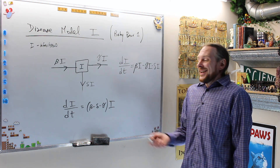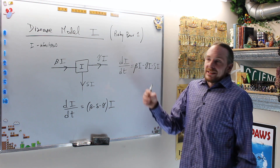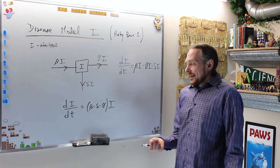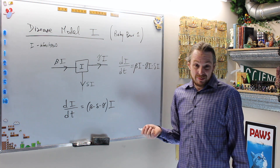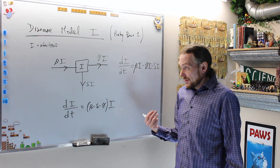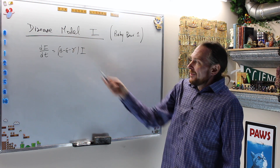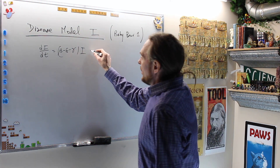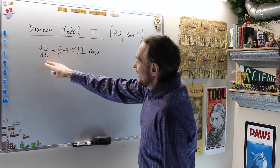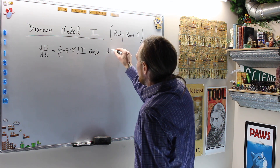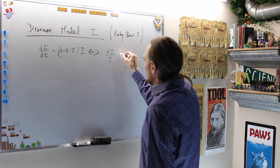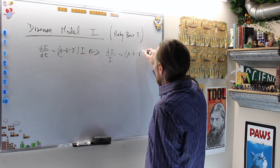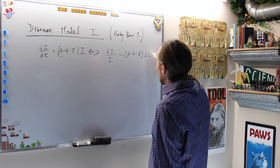We can make that look a little bit better. What I get is dI/dt equals, grouping this together, (beta minus delta minus gamma) times I. From that, I see this is a baby separable ODE, and we can solve this explicitly. dI/dt equals (beta minus delta minus gamma)·I.